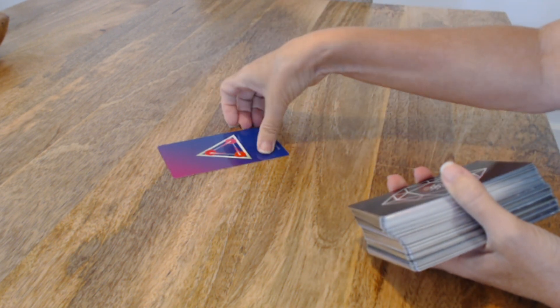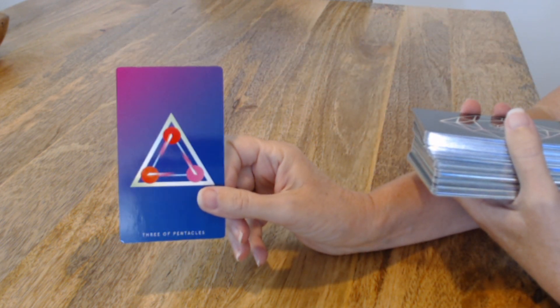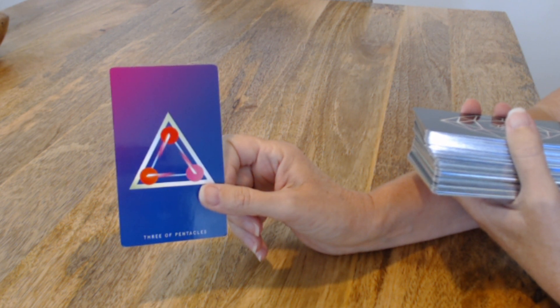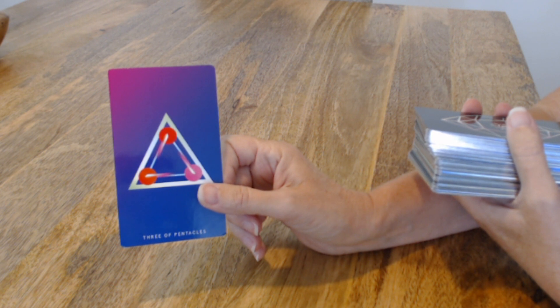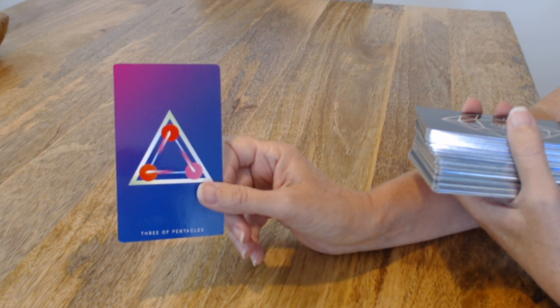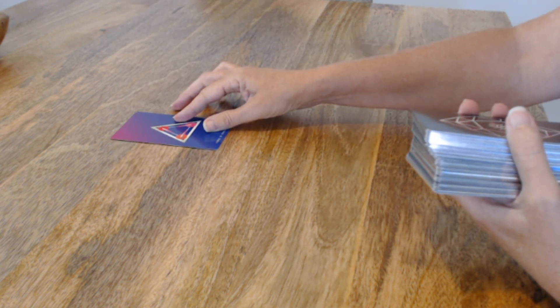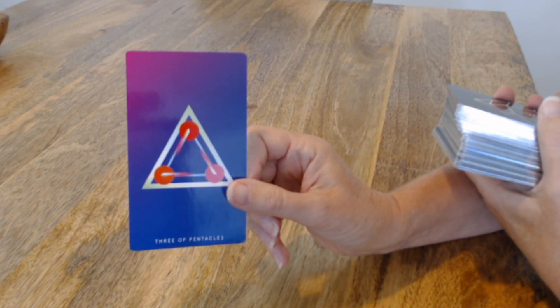Okay, first card: three of pentacles. Three of pentacles is a card about teamwork, working together with other people. If you're trying to reach a certain goal, you want those other people to be complementary to you. This could just be talking about being in a team situation.